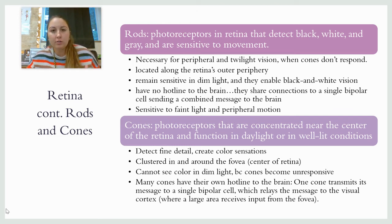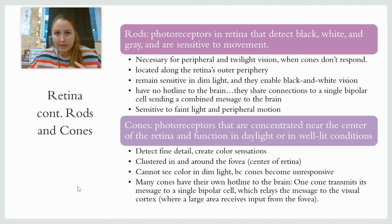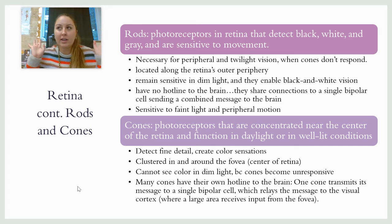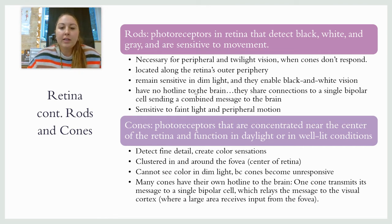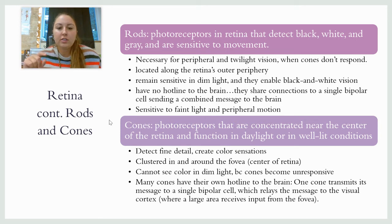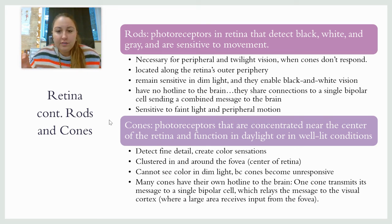Rods are the photoreceptors in the retina that detect black, white, and gray, and they are sensitive to movement. Your rods are in your peripheral vision — on the outside of the eye — and they're necessary for peripheral vision as well as twilight vision. When you see in the dark you can't see color, because color is processed by cones — the only things working in the dark are your rods. They remain sensitive in dim light, and rods share connections to a single bipolar cell, which sends a combined message to the brain.